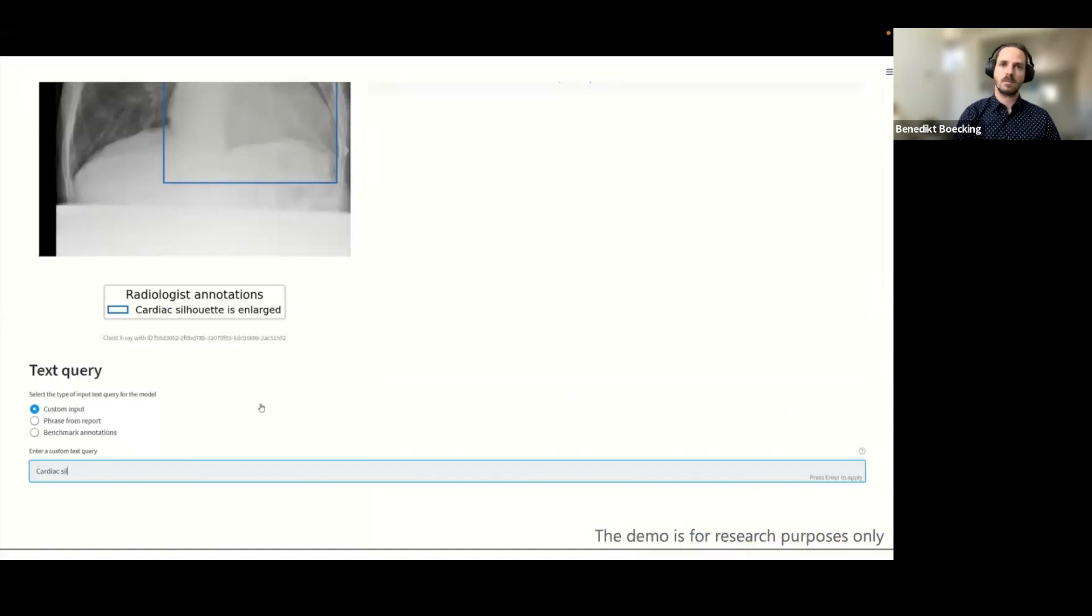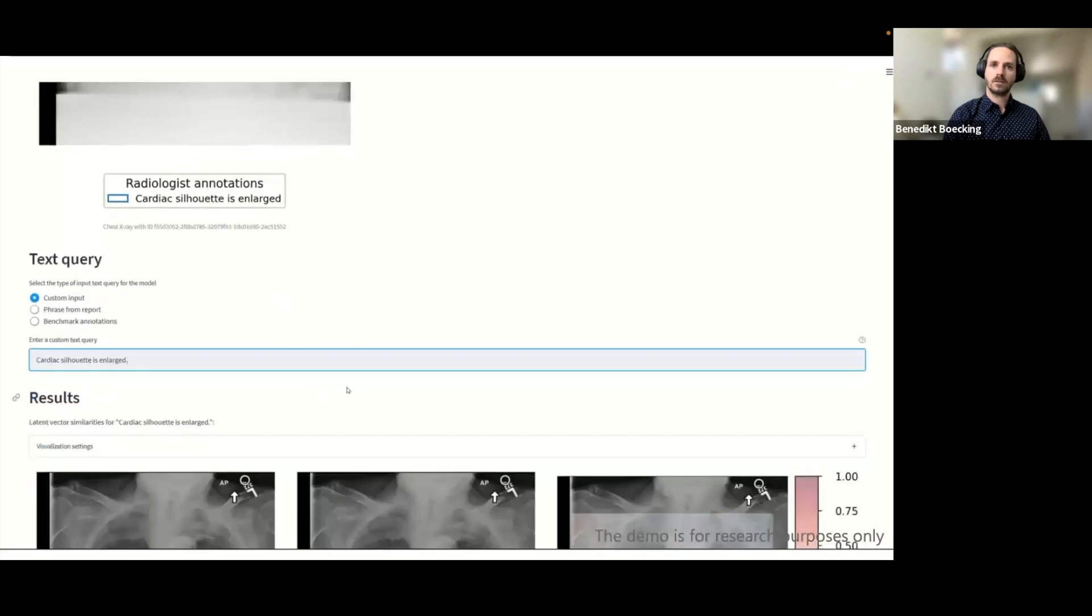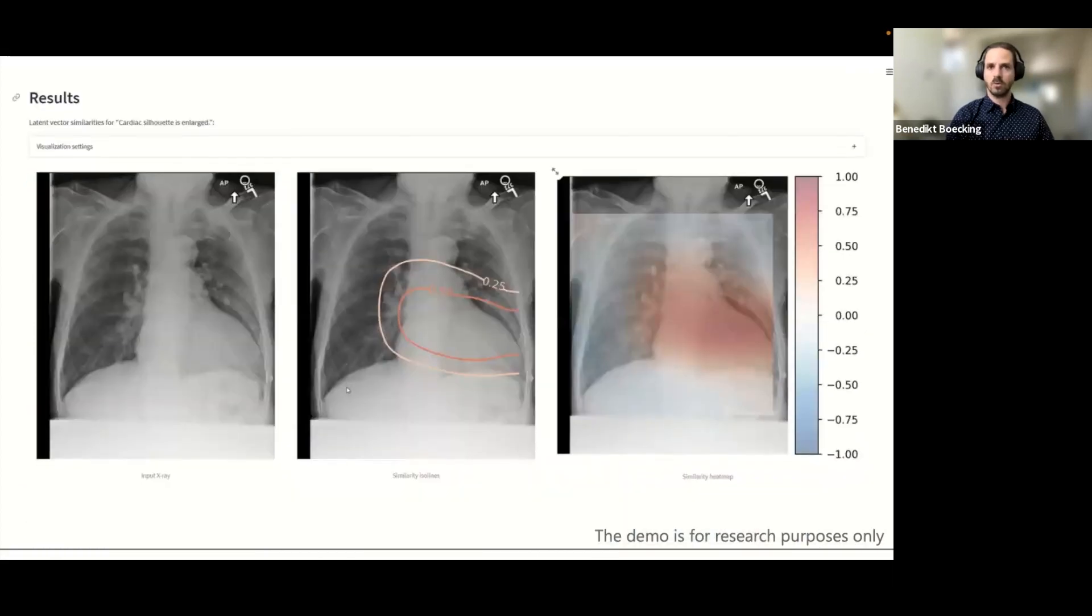On the image, you see the MS-CXR bounding box in blue, and below you see the phrase a radiologist annotated, which reads cardiac silhouette is enlarged. So we enter this phrase and pass the phrase and image to the joint model to compute the similarity in the latent space. And the result that is displayed now shows the ISO contours and a heat map of the similarity, which strongly overlaps for the ground truth annotation in this case.